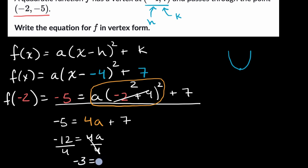And we're actually done, but we want to write the whole equation out. We know what a is and we know what h and k are, so let's just write it out. The equation is f of x is equal to a, which we now know is negative three, times x minus negative four, which we could just write that as x plus four, squared plus seven, and we are done.